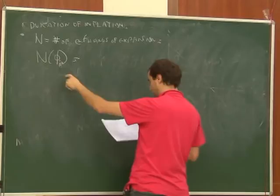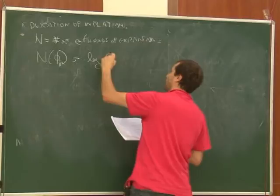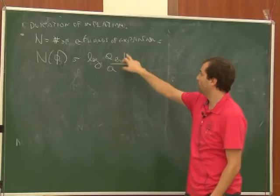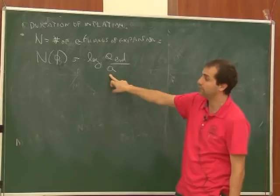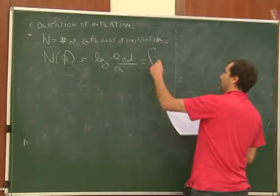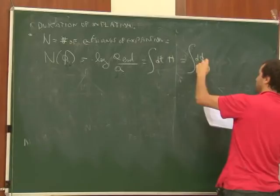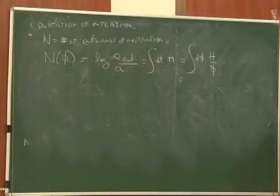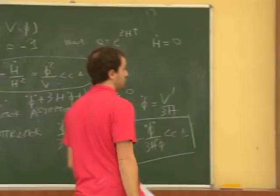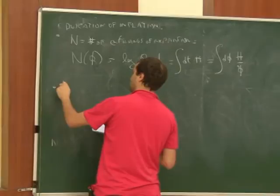The number of e-foldings depends on the initial conditions — where you place the field on the potential. We take the logarithm because for w ≈ −1, the scale factor grows exponentially with time, so it is convenient to take the log. One can perform this integral along the trajectory to determine how much the universe expands during inflation.